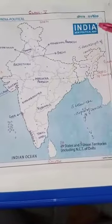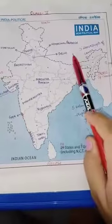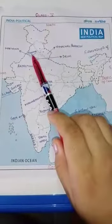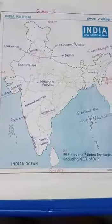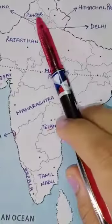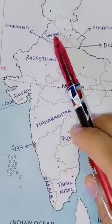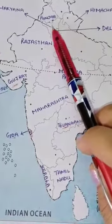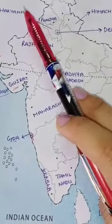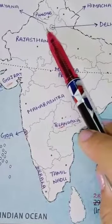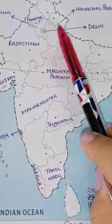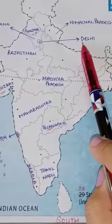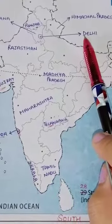Let's start with the first part. The first state is Punjab. Below Punjab is Haryana. And this boundary with one dot is Delhi — the National Capital Territory of India.